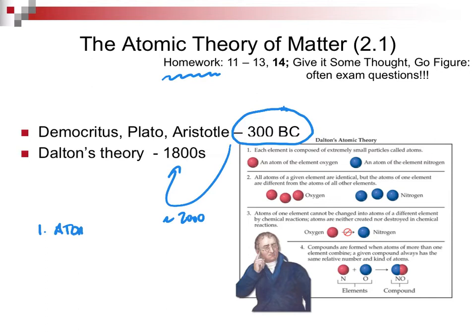Dalton said that every element is composed of atoms — red for oxygen and blue for nitrogen, as your book shows. He also said that atoms of a given element are all identical. So they show three reds for oxygen and three blues for nitrogen: identical to each other but different from atoms of another element.